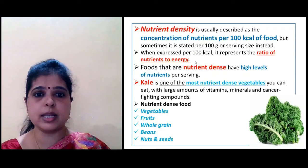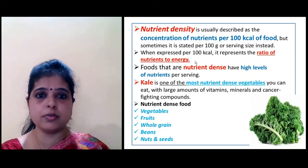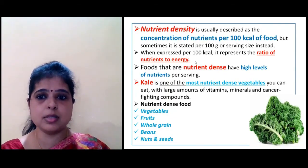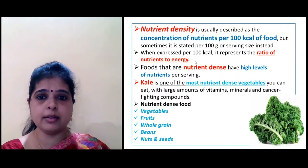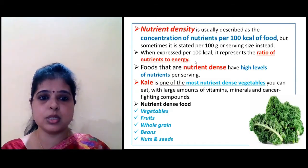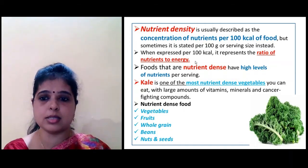Foods that are nutrient dense have a high level of nutrients per serving. Kale is one of the most nutrient dense vegetables with a large amount of vitamins, minerals, and cancer-fighting compounds. Nutrient dense foods include vegetables, fruits, whole grains, beans, nuts, and seeds.